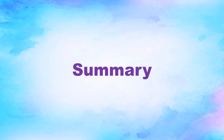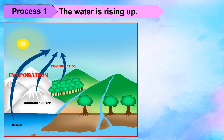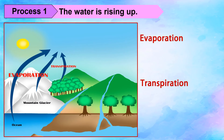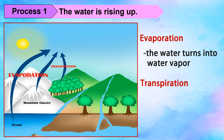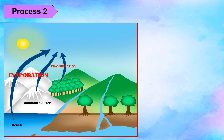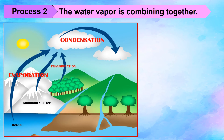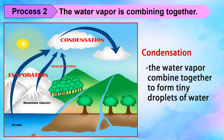Let us sum up. Process 1: The water is rising up. In this process, evaporation and transpiration are occurring. Evaporation is the process in which water turns into water vapor. Transpiration is the process in which the water inside the plants escapes from its stomata. Process 2: The water vapor is combining together. In this process, condensation is happening. Condensation is the process in which water vapor combines together to form tiny droplets of water.